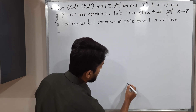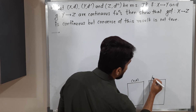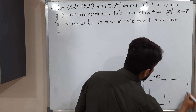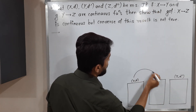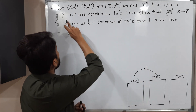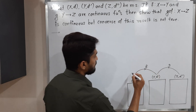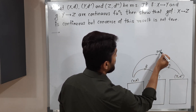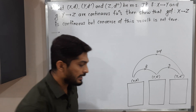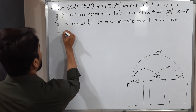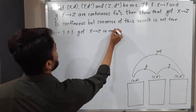We have three metric spaces: the first one is XD, the second is YD dash, and the third is ZD double dash. The given information is F is a function from X to Y, and G is a function from Y to Z. Given that F and G are continuous functions, we have to prove that the composition G composite F, from X to Z, is a continuous function.